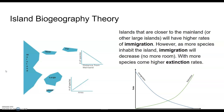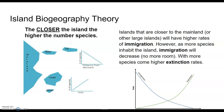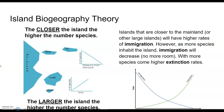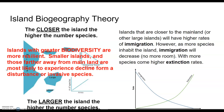Island biogeography theory has two main pieces. Organisms from the mainland will drift through ocean or wind currents and land on islands. The closer the island, the higher the number of species; the larger the island, the higher the number of species. Larger, closer islands are more resilient and better able to withstand disturbances, while smaller, more distant islands are most likely to experience decline.